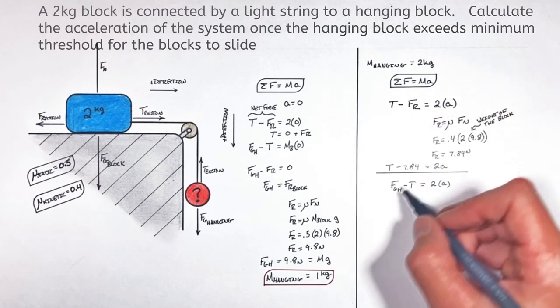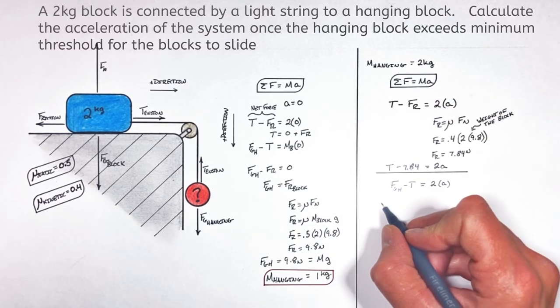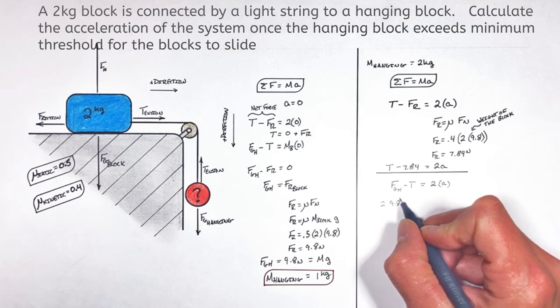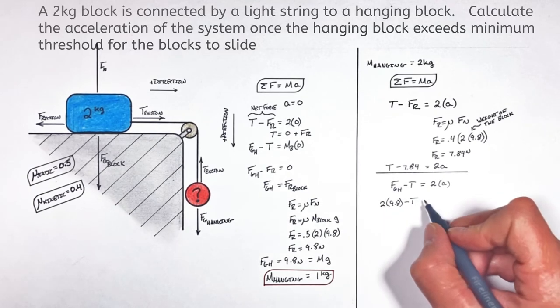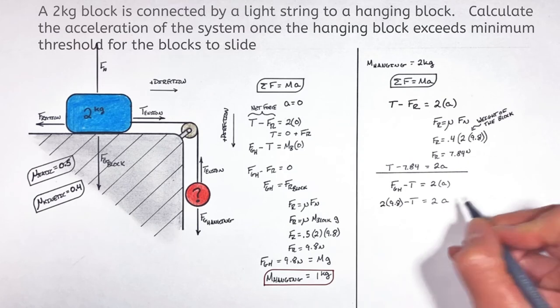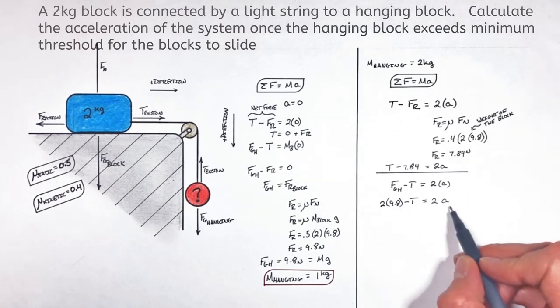Now because we know the mass of the hanging block, we can solve for the weight of the hanging block. It's going to be two times nine point eight minus T, that's going to equal 2a, leaving us with the second equation that relates the tension in the string to the acceleration of the blocks.